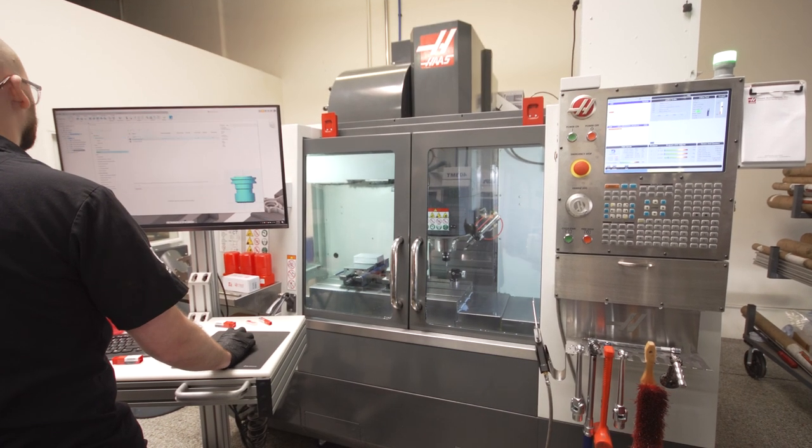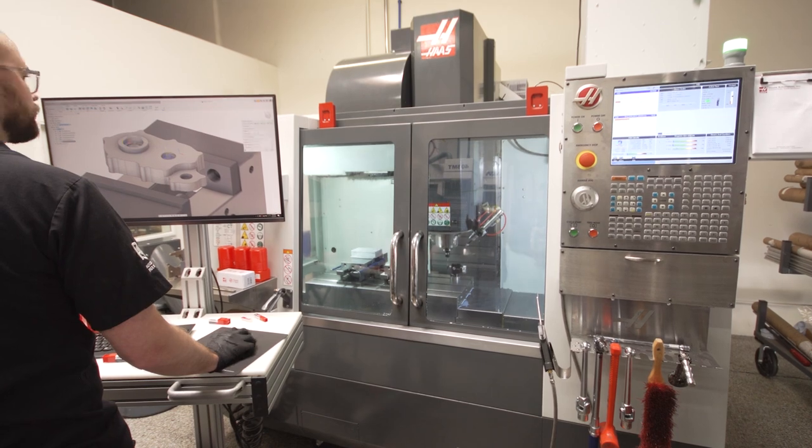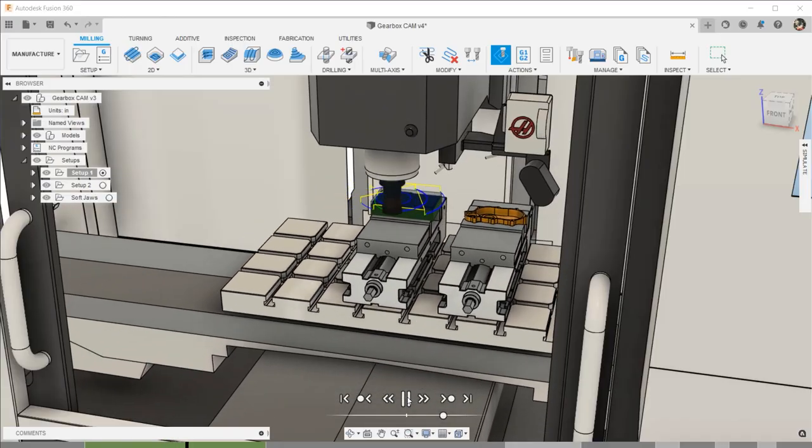With the vices and tools all loaded up, I'll let the machine do the work to set the offsets, and I'll double check my program using machine simulation to check for any collisions.